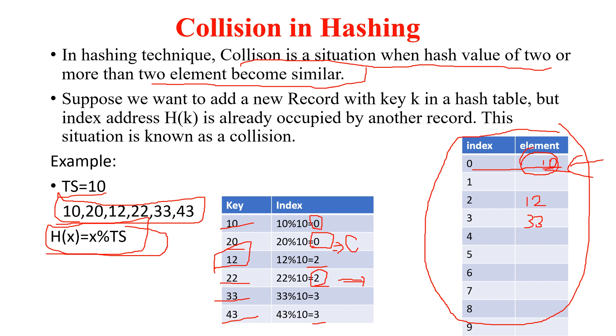If two elements are getting the same index, that is called collision. That's all about the collision in hashing. Thank you for watching my video.